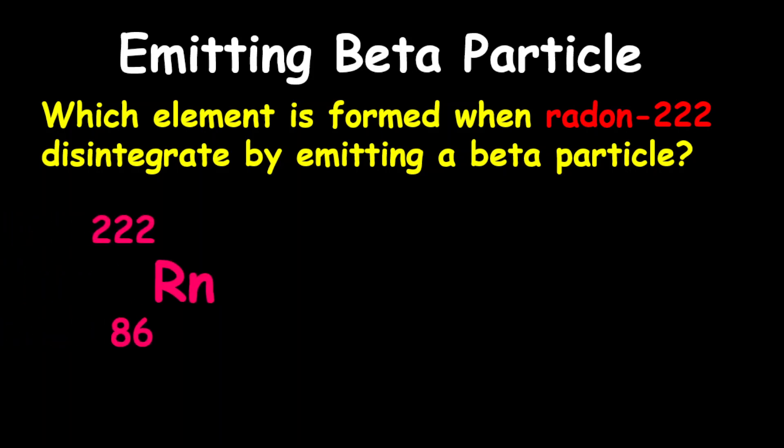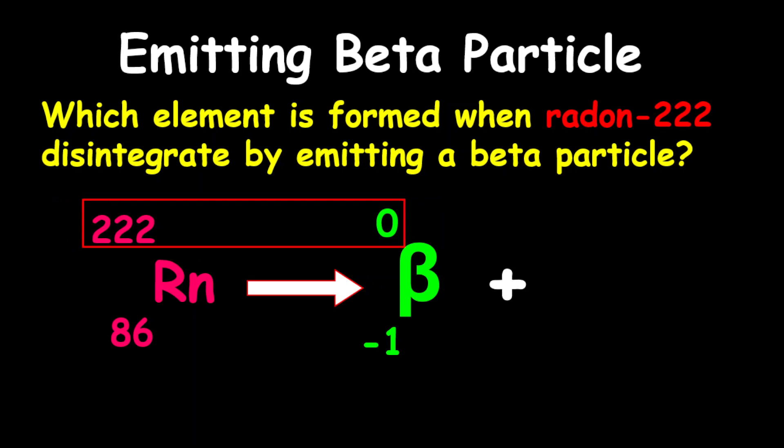Radon has a proton number of 86. It gives off a beta particle, so it will be a product. Now to determine the new element that is formed, what we're going to do is minus 0 from 222. Naturally, there is no change in mass, so the new mass is 222, just as before.